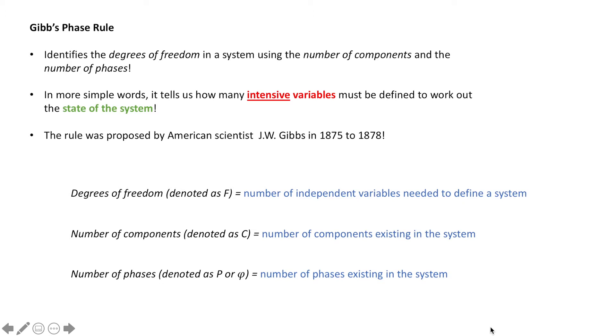The rule was first proposed by American scientist J.W. Gibbs in a series of works published between 1875 and 1878. So just some definitions for you: